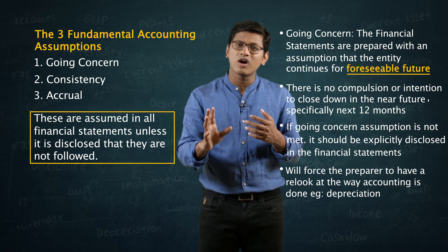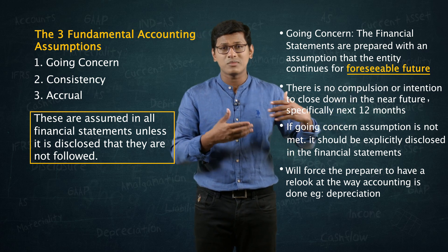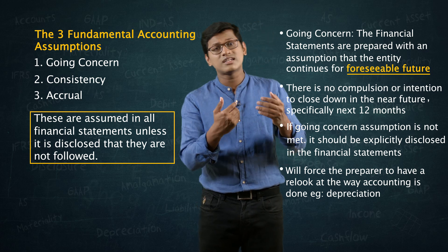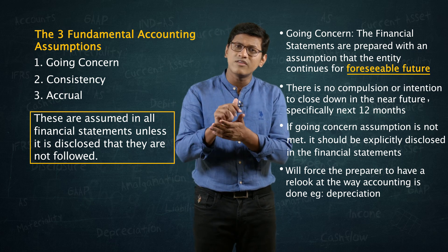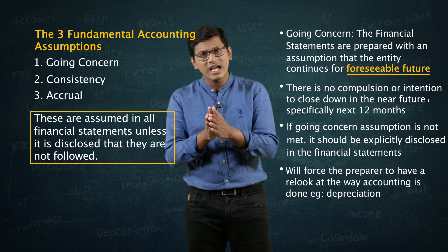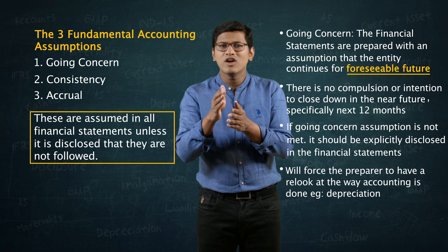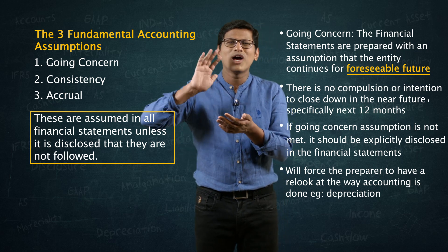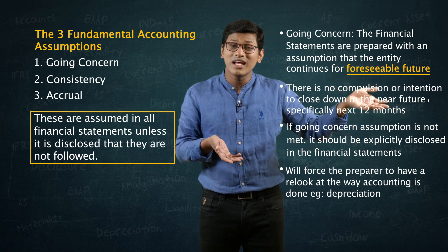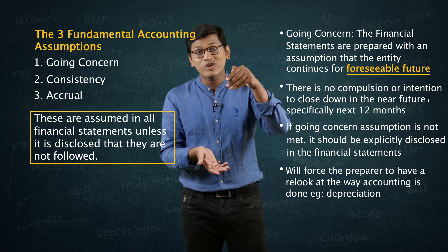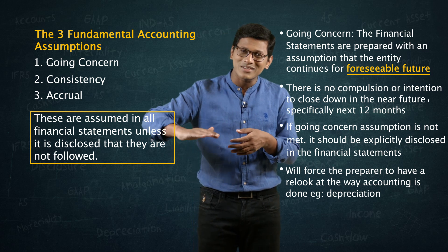Similarly, you make something called provision for bad and doubtful debts — assuming that over the next one or two years you may or may not receive certain amounts from debtors. You also make provision for warranties — say you gave a 2-year warranty; you already made a sale and have to make a provision for warranty. You make a provision for gratuity and so on. A lot of these provisions are to be settled in the future, but you are providing for them today.